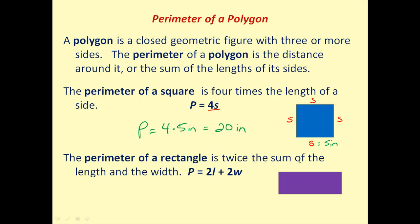Similarly, the perimeter of a rectangle is twice the sum of the length and the width, or 2 times the length plus 2 times the width. If this side is length l, then the opposite side would also be length l. And if this one is length w, the opposite side would also be length w. Notice we have two l's and two w's, hence the perimeter formula.